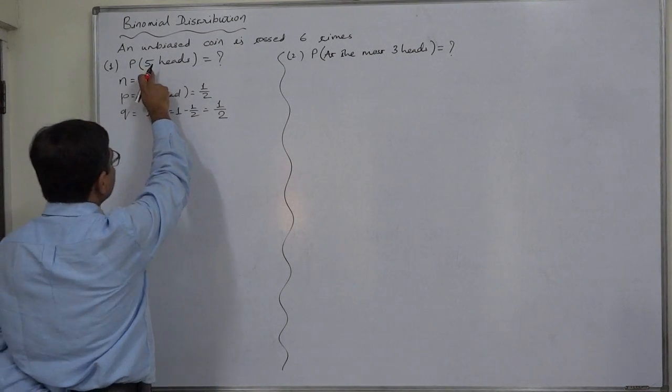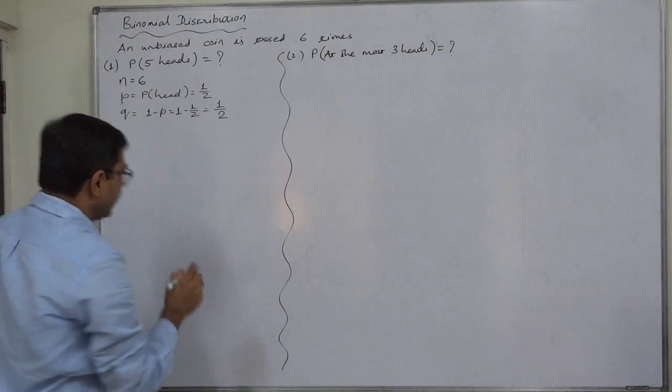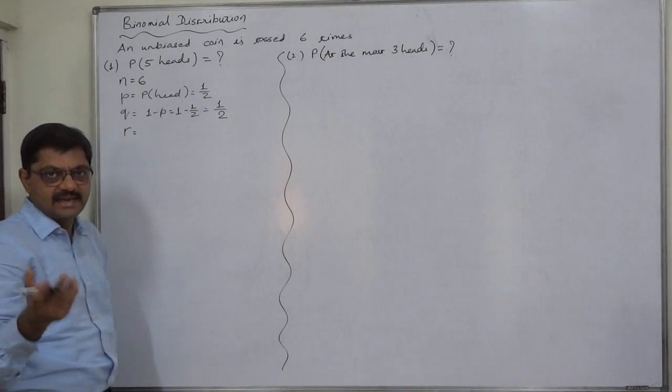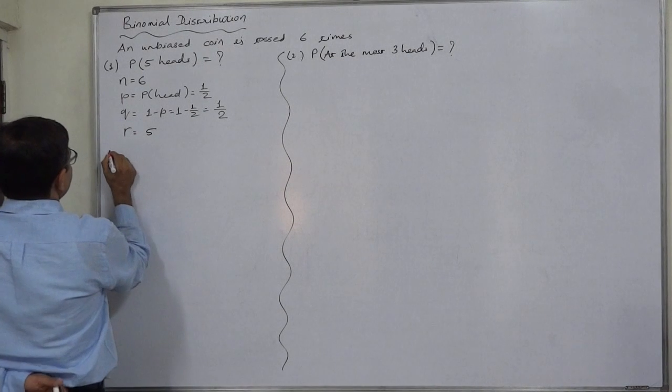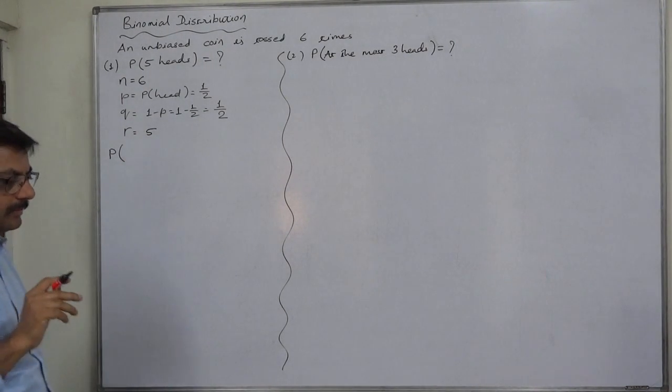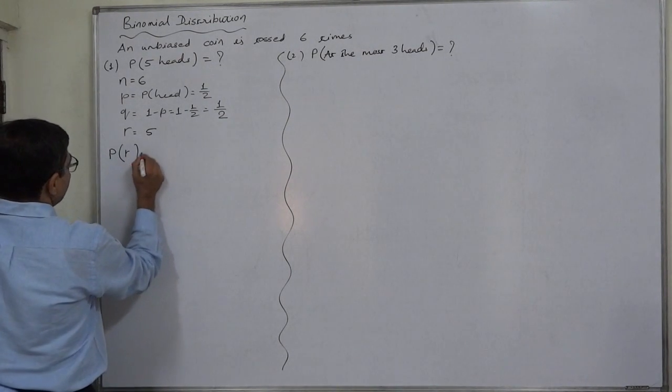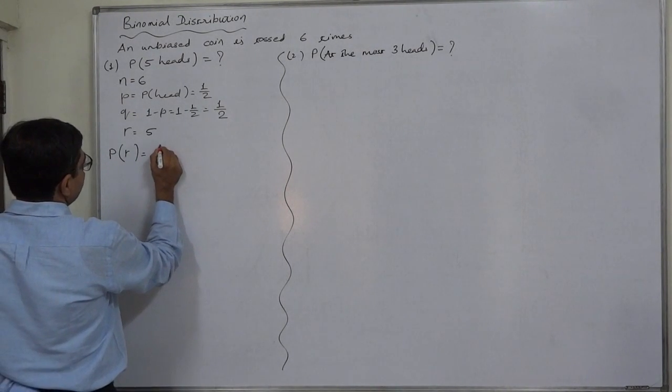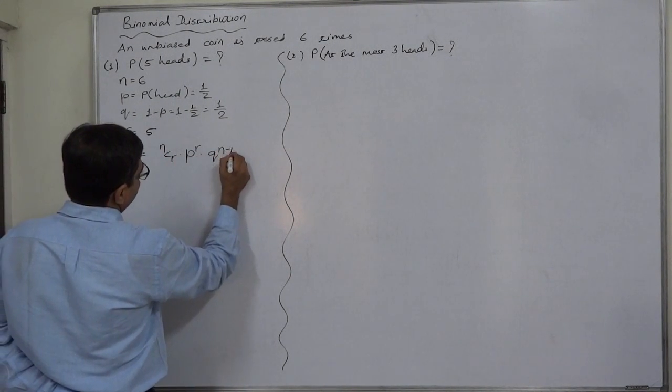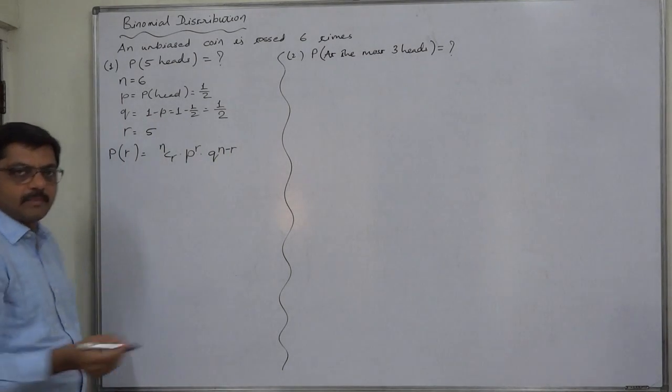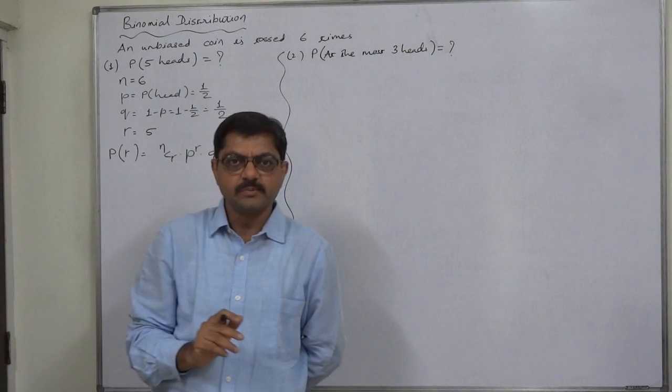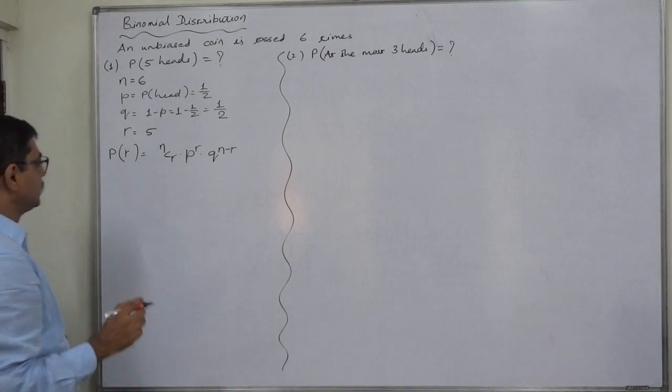We are interested in calculating the probability of exactly five heads, so R, or you may be using the sign X, is five. According to binomial probability distribution, the probability density function is P of R equals nCr into P raised to R into Q raised to n minus R. Q is nothing but one minus P. Many teachers suggest the sign of one minus P instead of Q, but Q can be officially used.